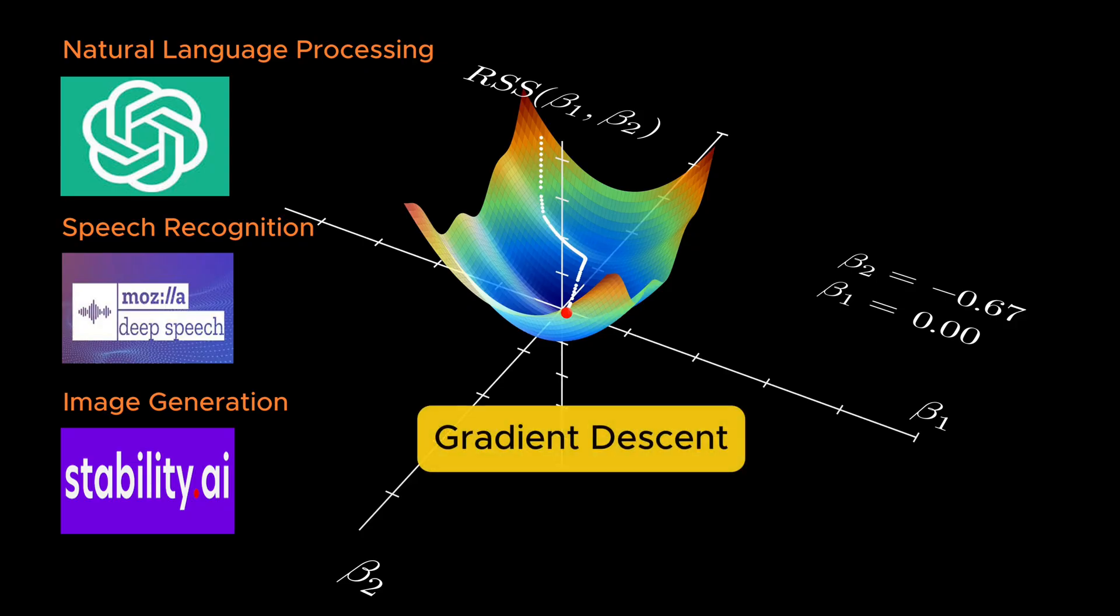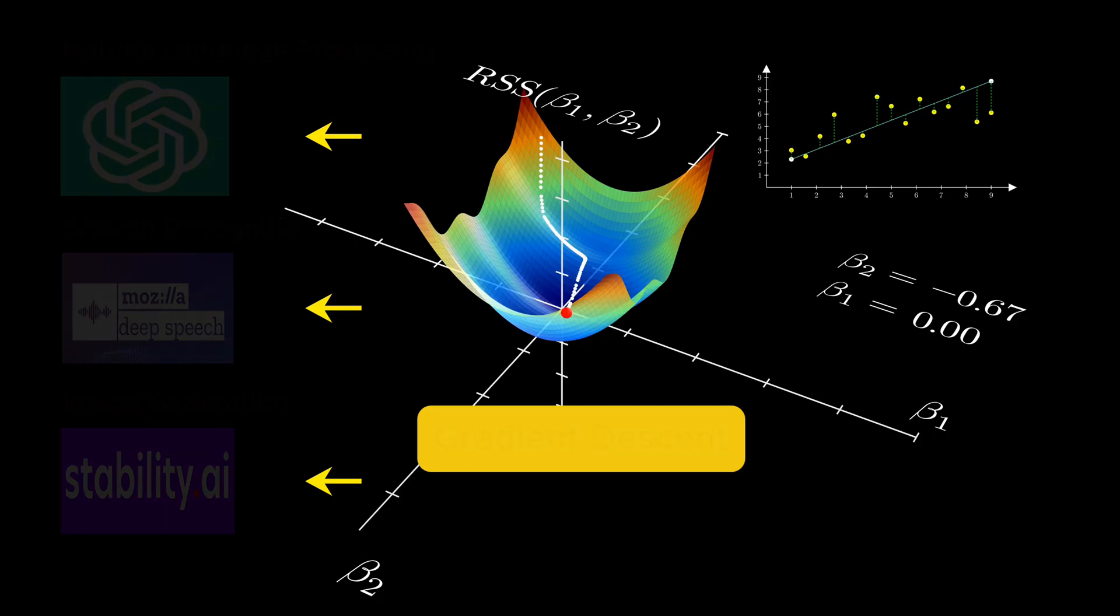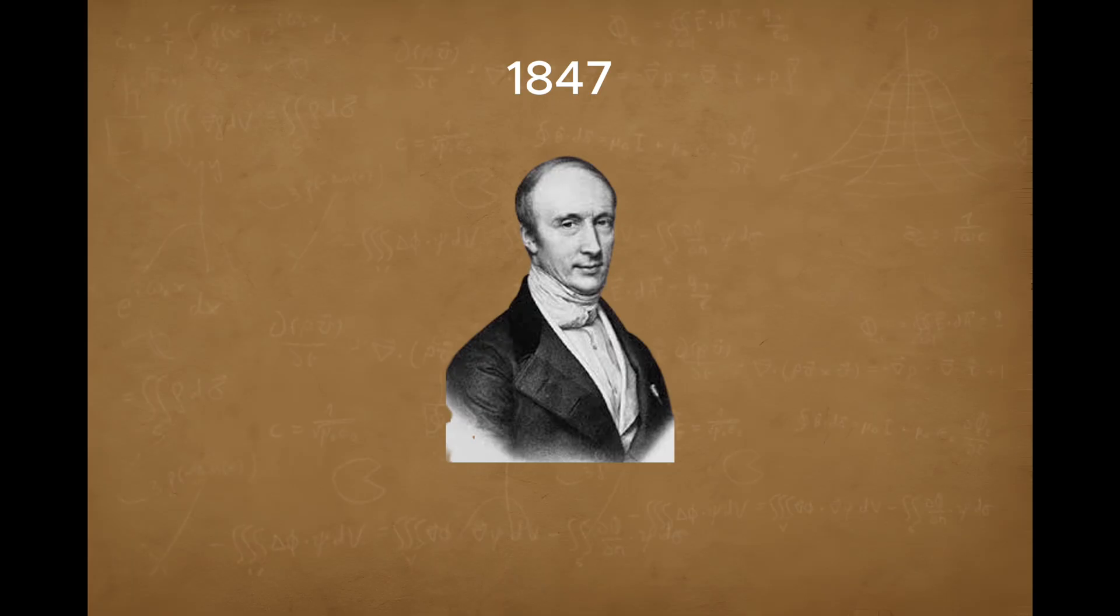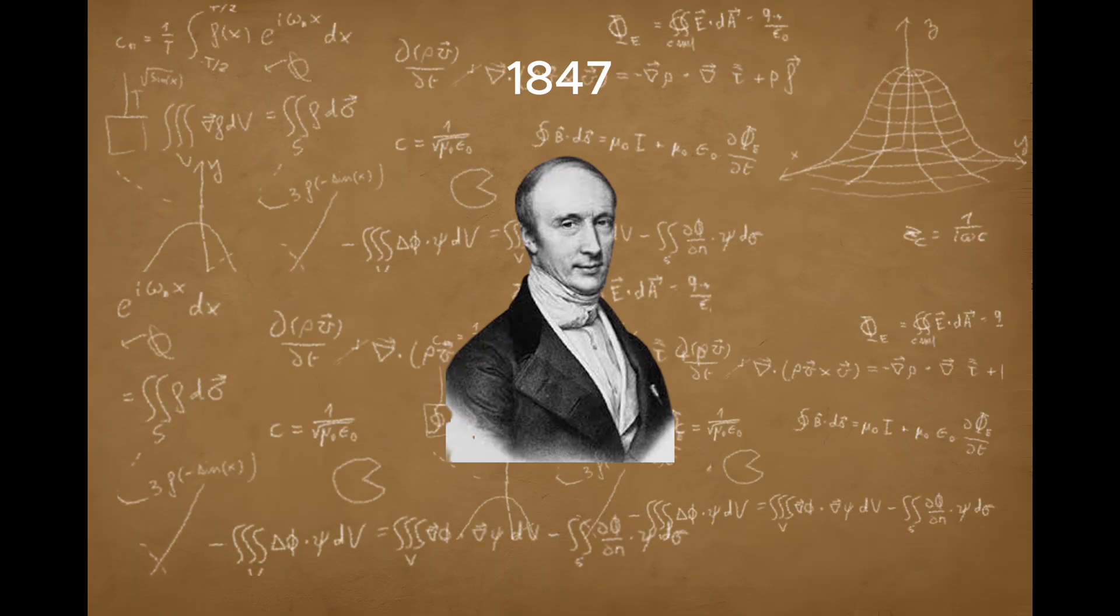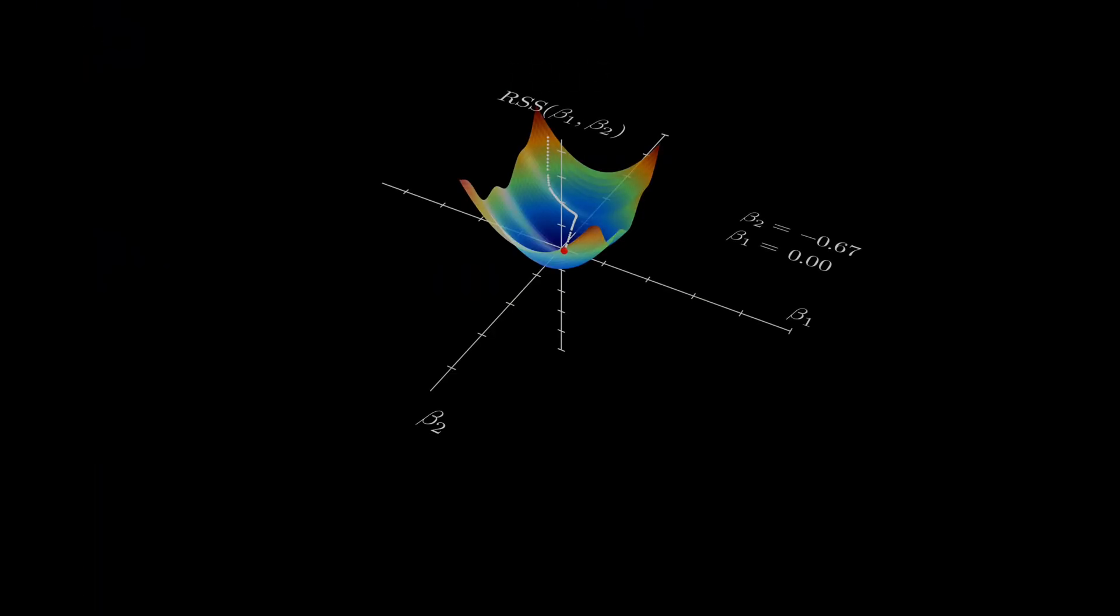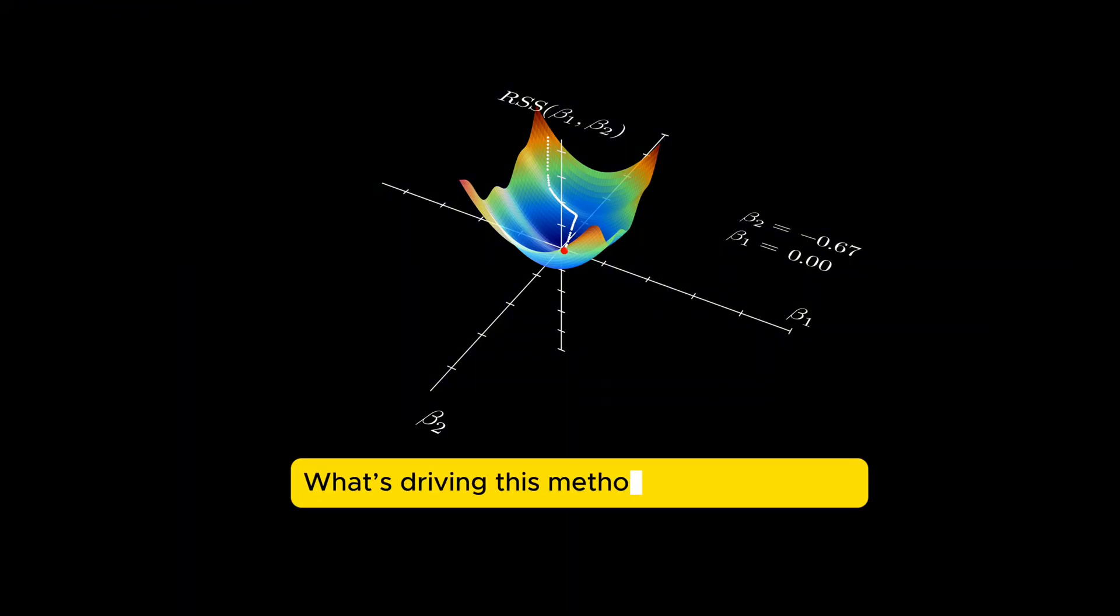It's called gradient descent, and it's the backbone of training everything from a simple linear regression model to the largest neural networks used in state-of-the-art AI. But here's something surprising. This powerful idea wasn't invented by a computer scientist or an AI engineer. It was first proposed in 1847 by Augustin-Louis Cauchy, a French mathematician and physicist. So how exactly did a 19th century idea become the core training method for AI?